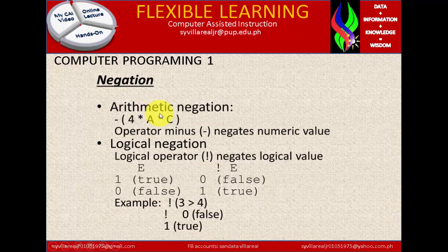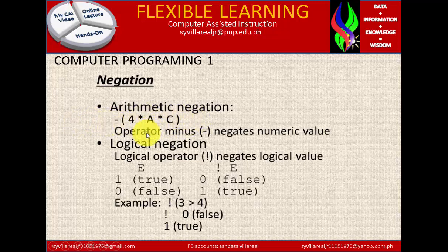In negation — arithmetic negation — there is a subtraction or minus sign at the beginning of a number, letter, variable, or function. Negation can be negative or positive sign. We can call this the negation of a function 4 times A times C. The minus operator negates a numeric value. Logical negation negates a logical value. For example: NOT 1 gives 0, because you put negation on 1. NOT 0 gives 1, because after 0 we have 1.